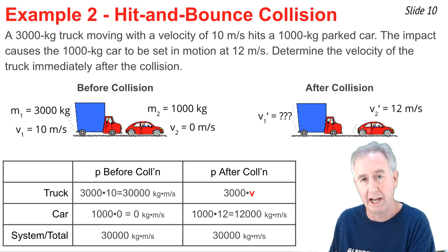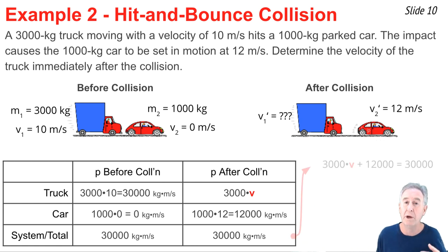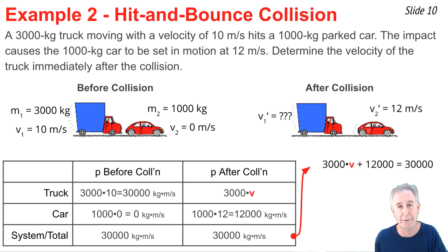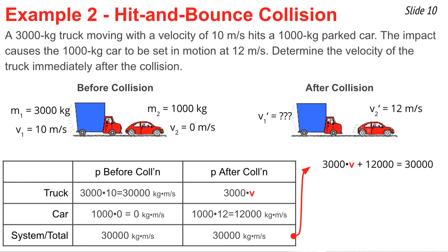Since truck plus car must equal 30,000 after the collision, I write: 3,000v + 12,000 = 30,000. Subtracting 12,000 from both sides: 3,000v = 18,000. Dividing by 3,000: v = 6 meters per second. That is the truck's velocity after the collision.